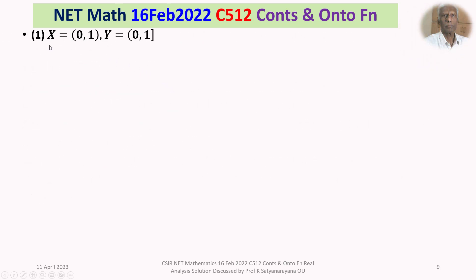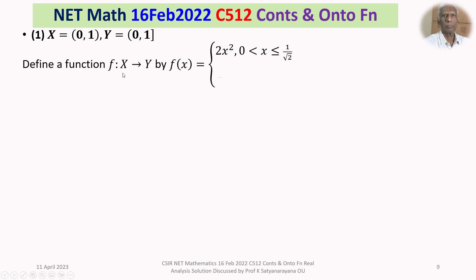Now we take option 1. X is equal to the open interval (0,1), Y is equal to the semi-closed interval (0,1]. In this case, we will show that there exists a continuous onto mapping from X to Y by exhibiting an example. Define a function f from X to Y by f(x) = 2x², when 0 < x ≤ 1/√2, and f(x) = 1, when 1/√2 < x < 1.